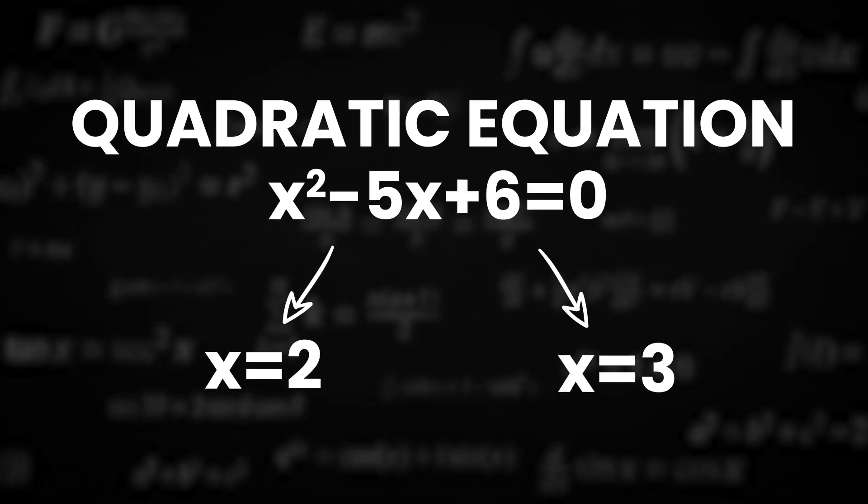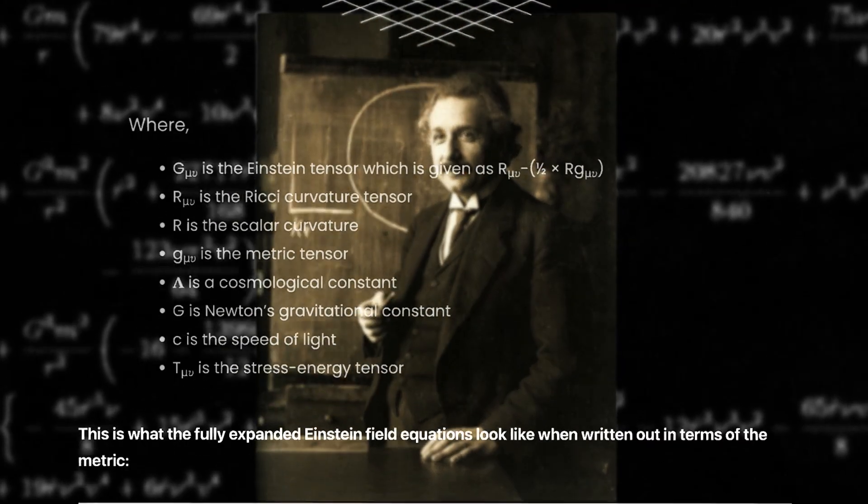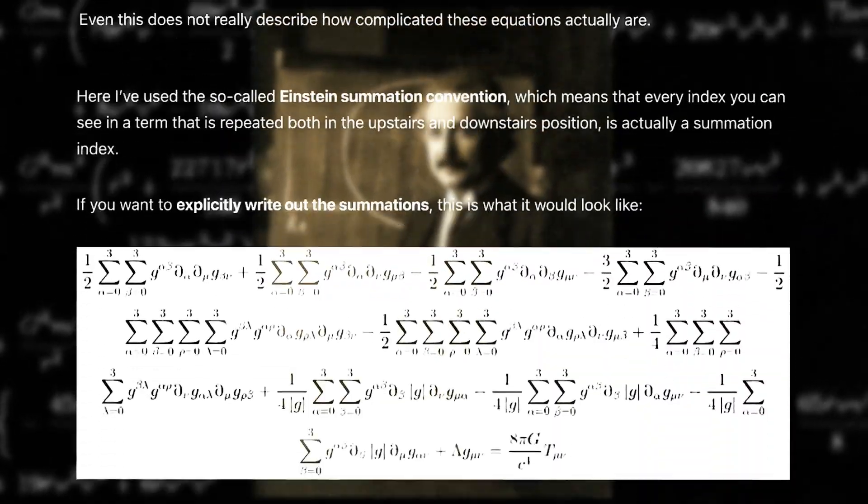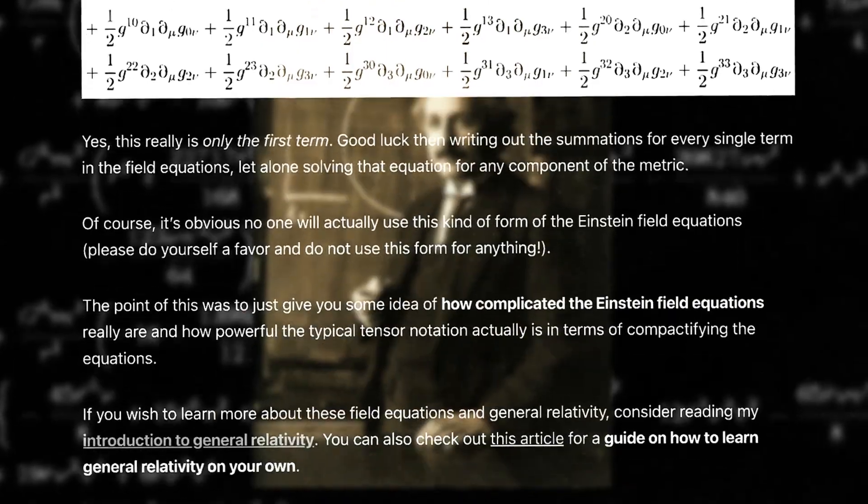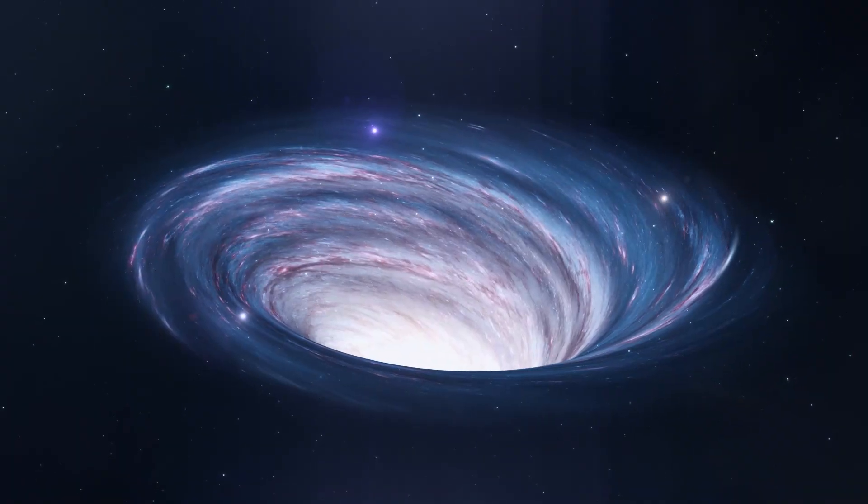Both of these statements are correct. If you look at Einstein's field equations, they are much more complex. In fact, there are many possible solutions to these field equations. Wormhole is one of them.